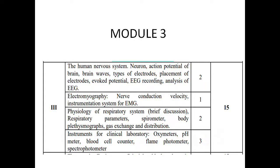We will start with the respiratory system, covering respiratory parameters, spirometer, body plethysmography graph, gas exchange and distribution. We will also discuss clinical laboratory instruments: oximeters, pH meter, blood cell counter, and other clinical laboratory instruments.